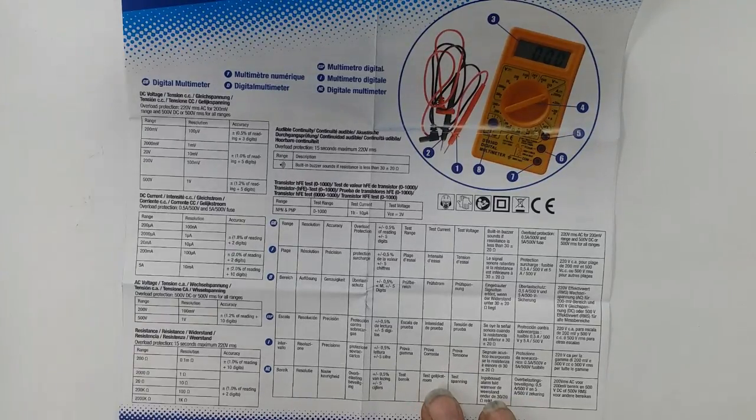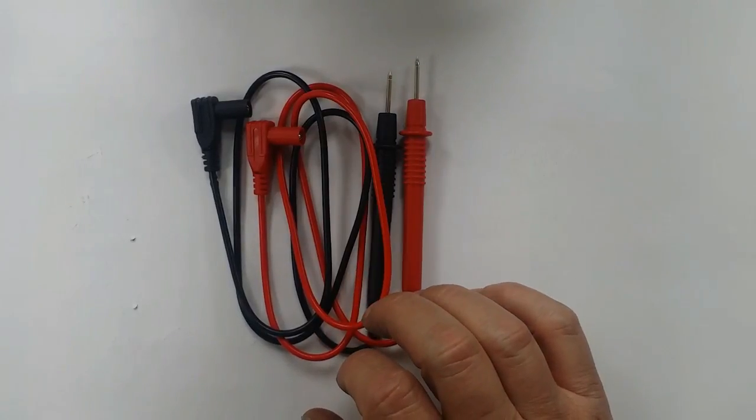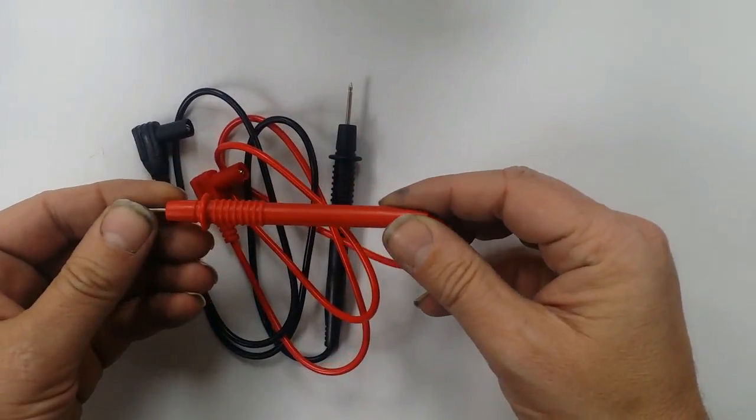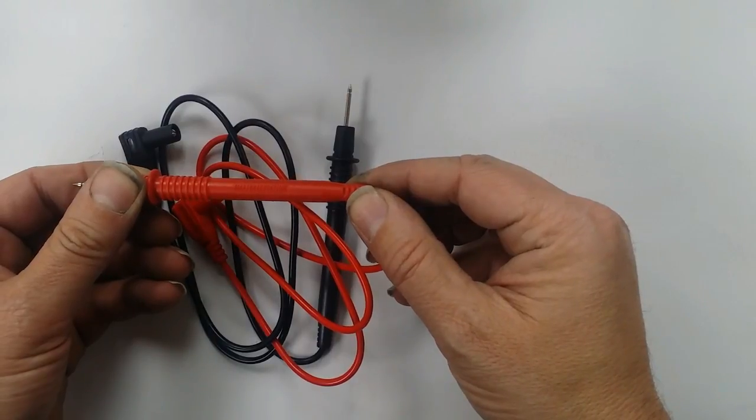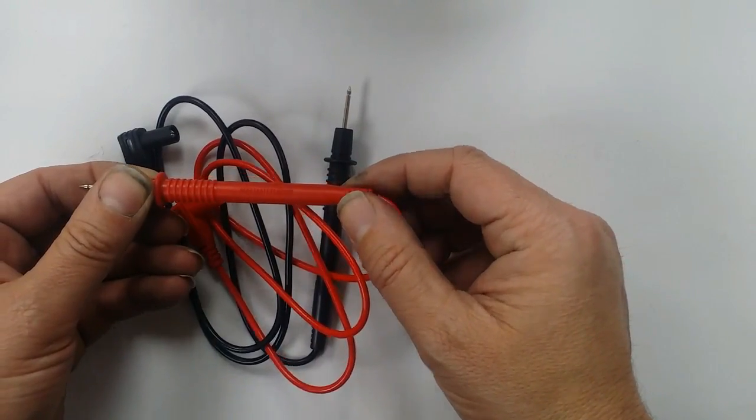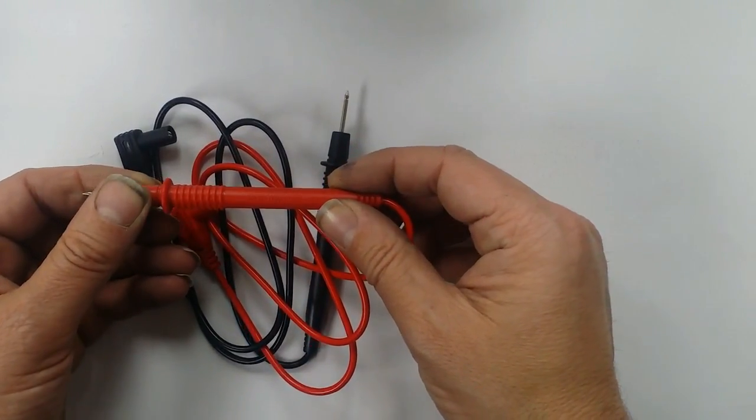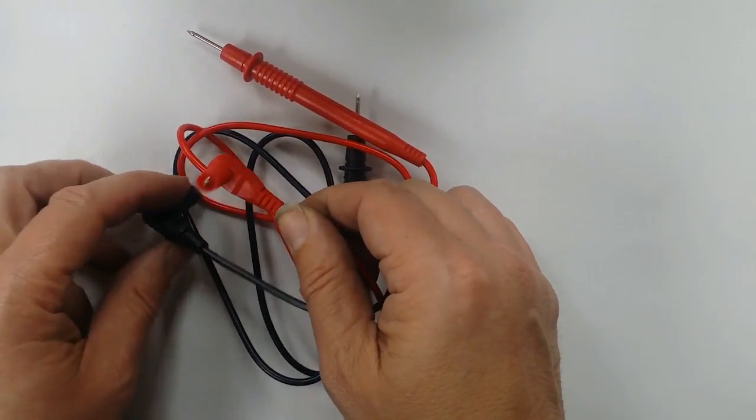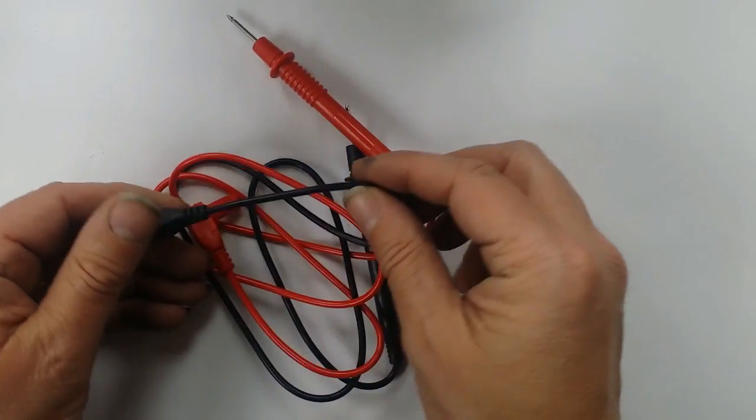Right, let's have a look at the leads. Right, here's the leads. Is there any writing on it? It does say max 10 amp category 2 on this end. Absolutely nothing on this end. They are shrouded. The cables do seem a bit thin.